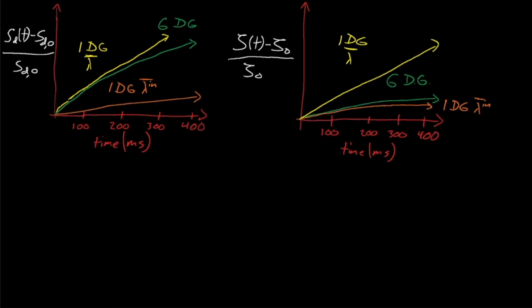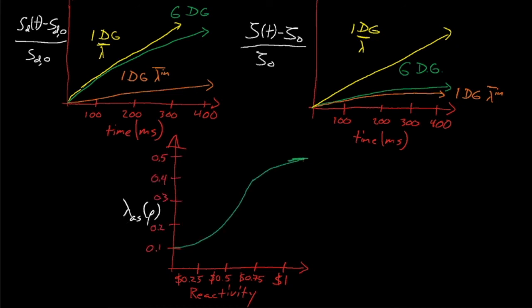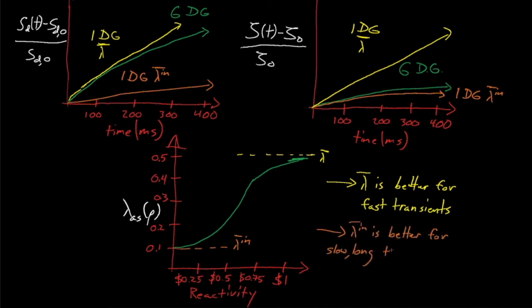Because large reactivity insertions generally cause fast transients and small reactivity insertions generally cause slow transients, beta weighting tends to be better for high reactivity insertions, and inverse beta weighting is better for small reactivity insertions. In fact, if you solve for some asymptotic lambda — the lambda that a transient would start following over a long enough time, and thus a representative one-group value of lambda for the full six-group solution — then lambda-asymptotic actually asymptotes towards the beta-weighted average lambda for large reactivity insertion transients, and towards the inverse beta-weighting lambda for small reactivity transients. This concludes today's take on the point kinetics equations. Next time we will discuss the in-hour solutions for these equations.